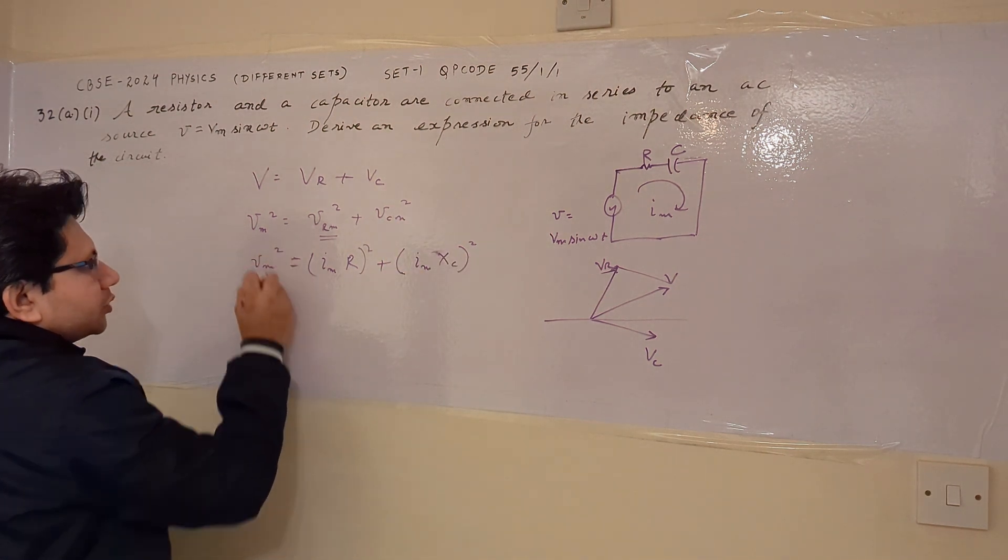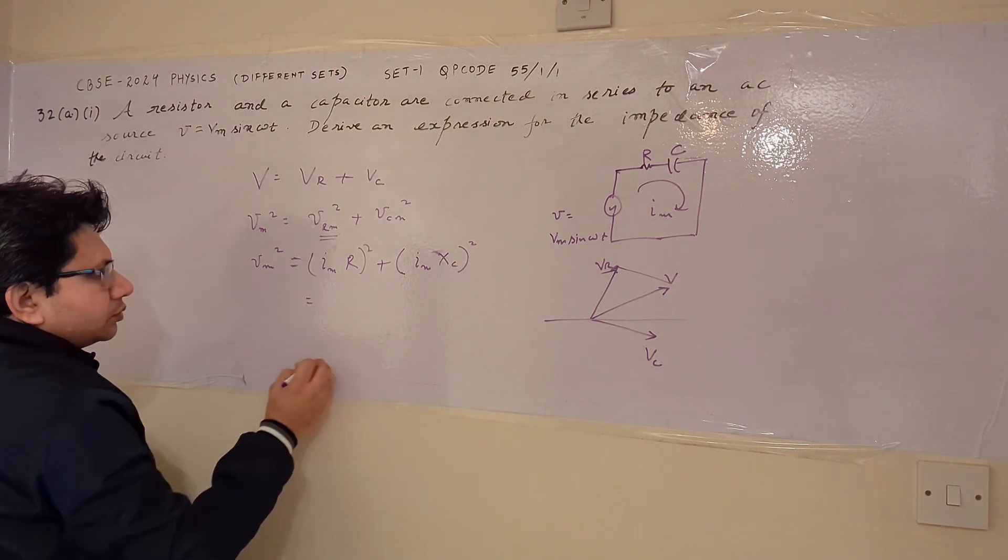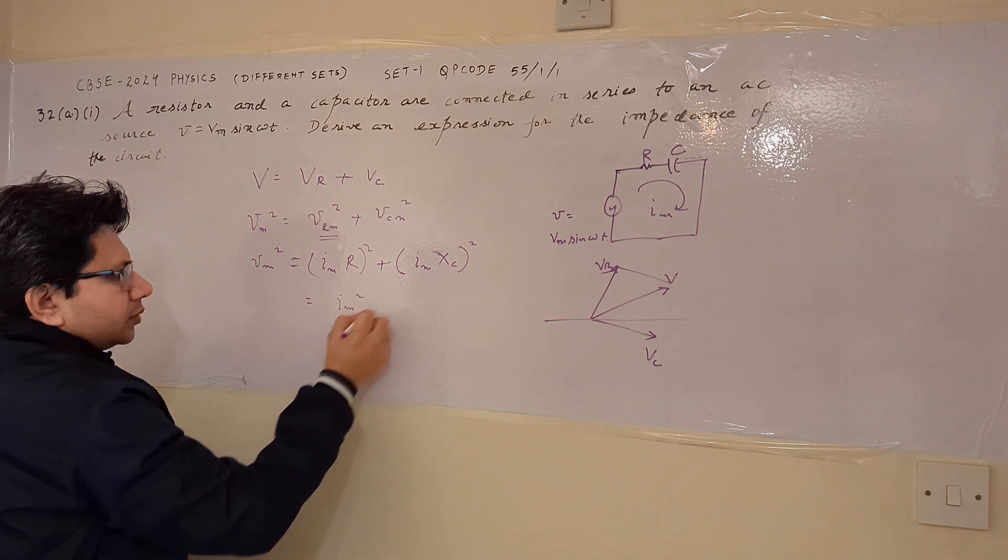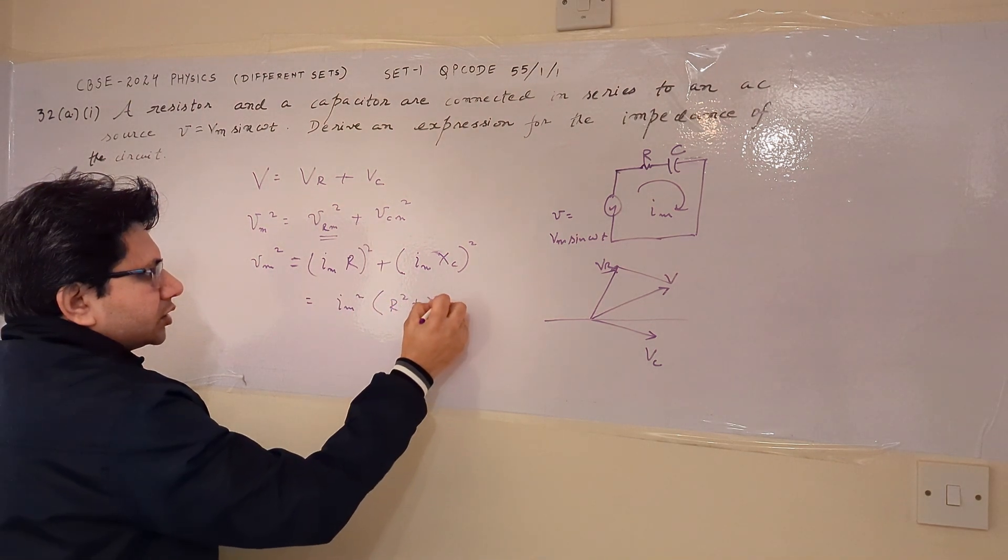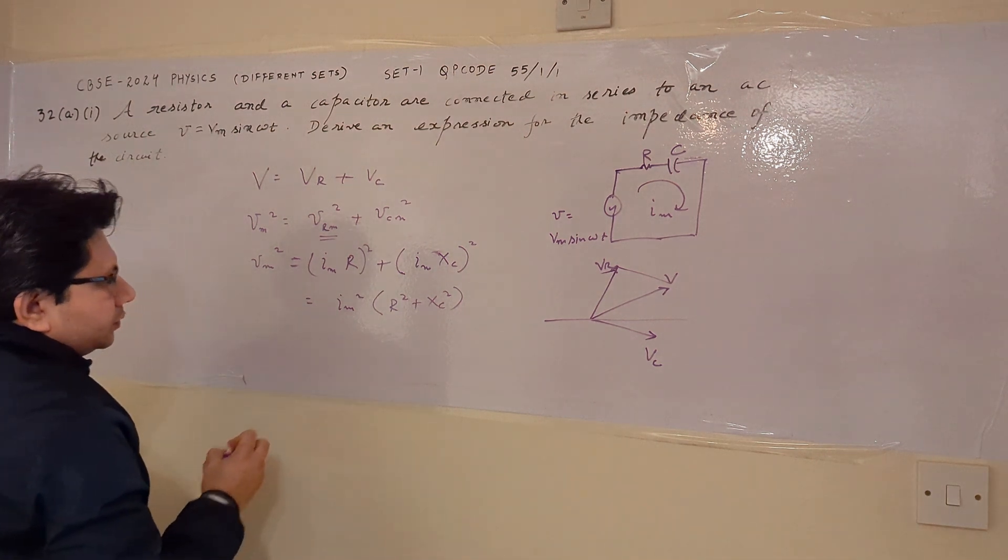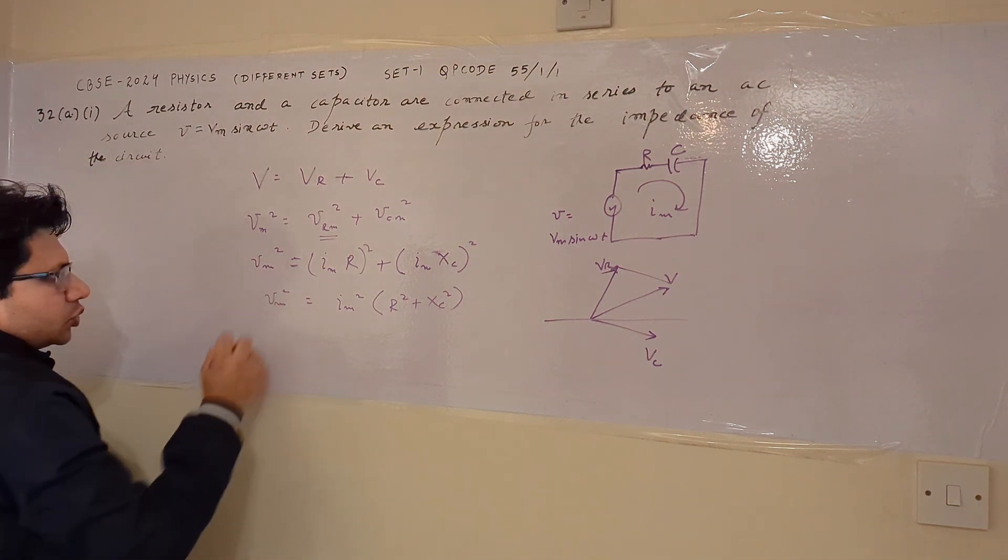So we can say that Vm square is equal to this expression. Now Im square is common and inside the bracket, we get R square plus Xc square. Now this is the value of Vm square.